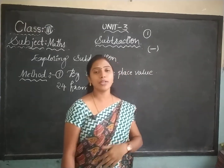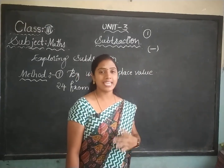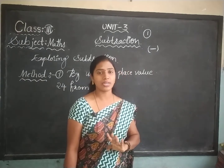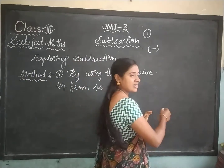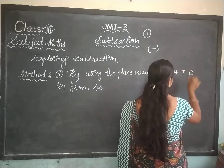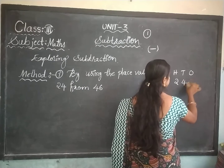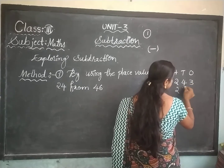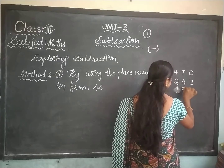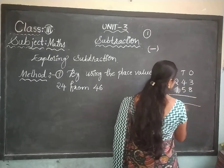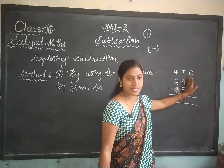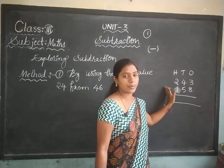How are we going to do subtraction? We are taking 2-digit numbers, 3-digit numbers, and 4-digit numbers also. Previously we were doing subtractions like this: ones, tens, hundreds. Suppose 243 minus 258. Like this — how will you do subtraction? First we do the ones column, after that the tens column, after that the hundreds column.